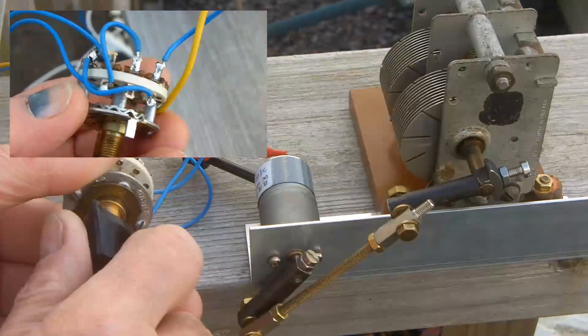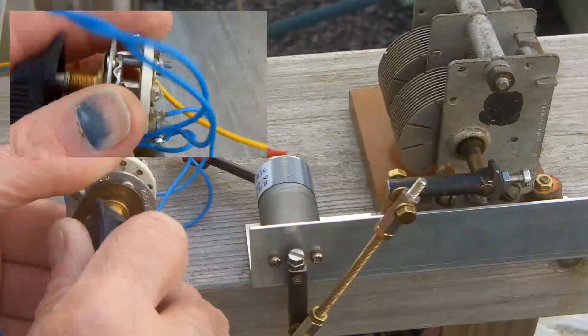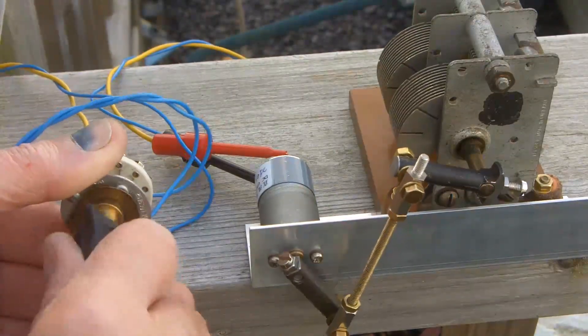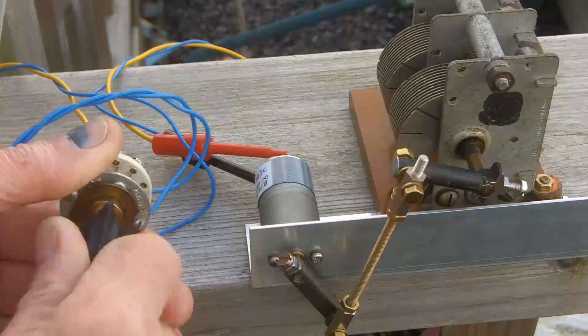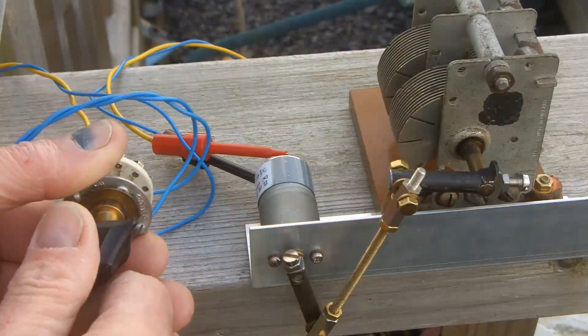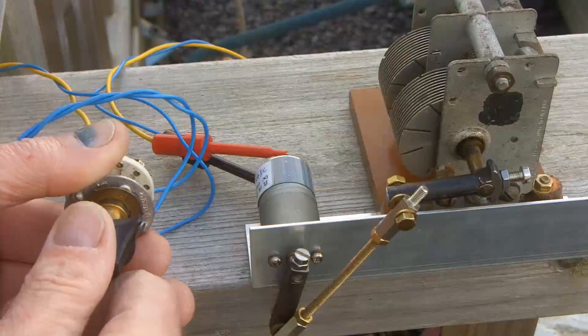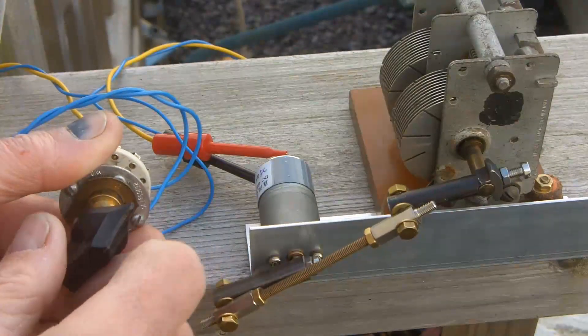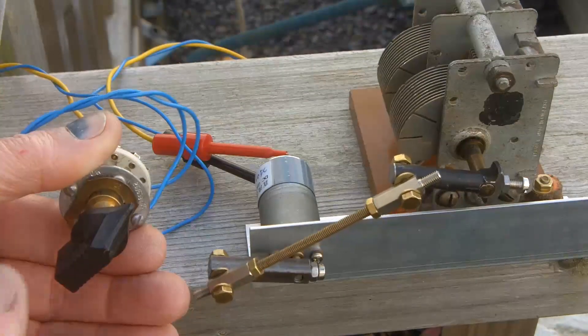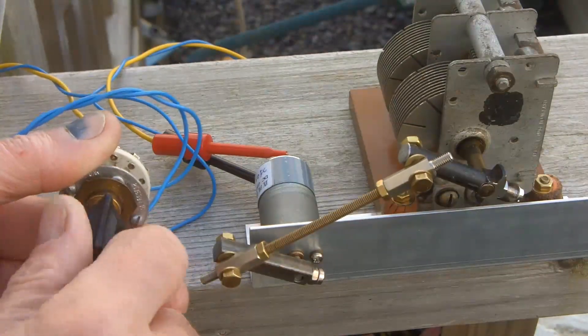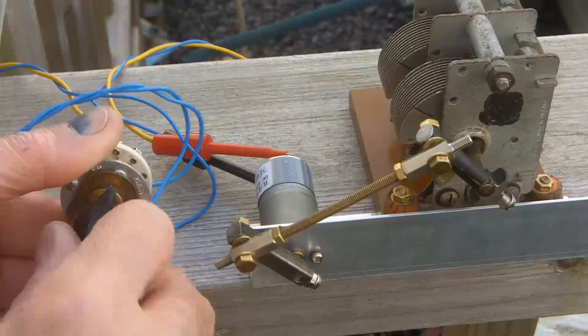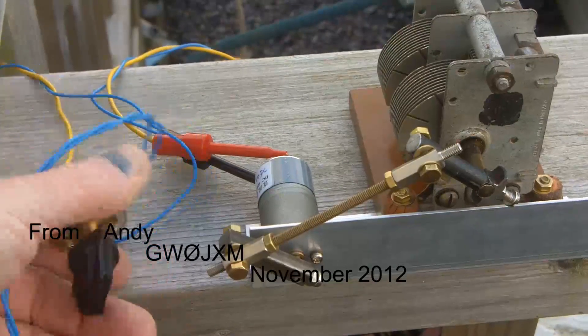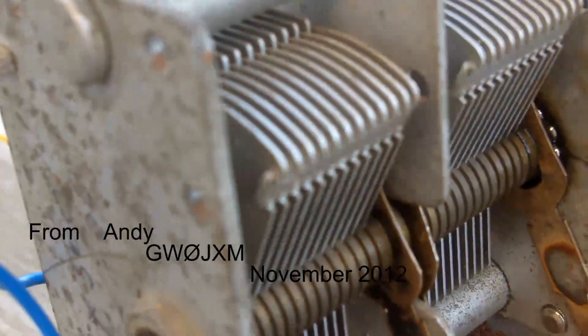I hope some of you actually set to and make it. I intend to use this to establish the capacitance of things like gamma matches and omega matches on the beam antennas that I'm making. Once I've been able to get the SWR sorted out with the antenna up in the air, I can simply bring it down, measure the capacitance, and make a fixed capacitor that stays with that antenna.